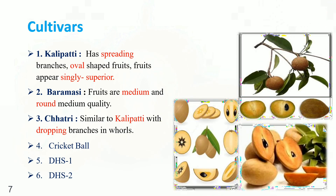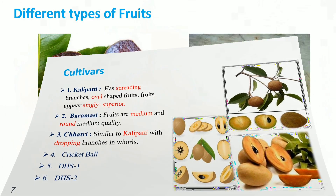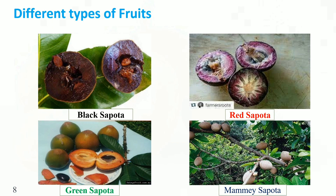Cultivars. 1. Kalipati: hair-spreading branches, oval-shaped fruits, fruits appear singly. 2. Baramasi: fruits are medium and round, medium quality. 3. Kshatri: similar to Kalipati with drooping branches. 4. Cricket ball. 5. DHS-1. 6. DHS-2. Different types of fruits: Black Spotter, Red Spotter, Green Spotter, and Mammish Spotter.